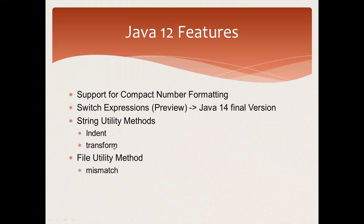We also have two new utility methods — indent and transform. In Java 11 we had four methods, and now we have six methods completely. Additionally, there is a new file utility method called mismatch. We are going to discuss all these features in the next session. Thank you guys.